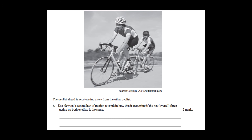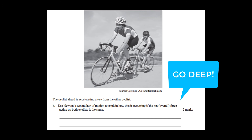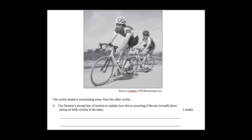Again, we want you to go deep with these answers. The first mark VCAA gave was for the definition: the rate of acceleration of an object is dependent upon the net force acting on that object and the mass of the object — so learn your definitions. Then throw in the equation: force equals mass times acceleration. Finally, the explanation: if force is equal, the rider in front must have a lighter mass than the rider in the back, and this lighter mass enables them to accelerate away from the other cyclist. If you can put that down, that'll get you two out of two for that question.